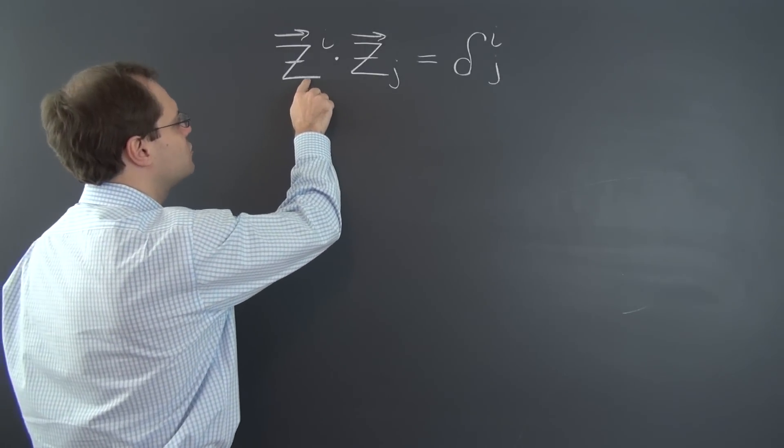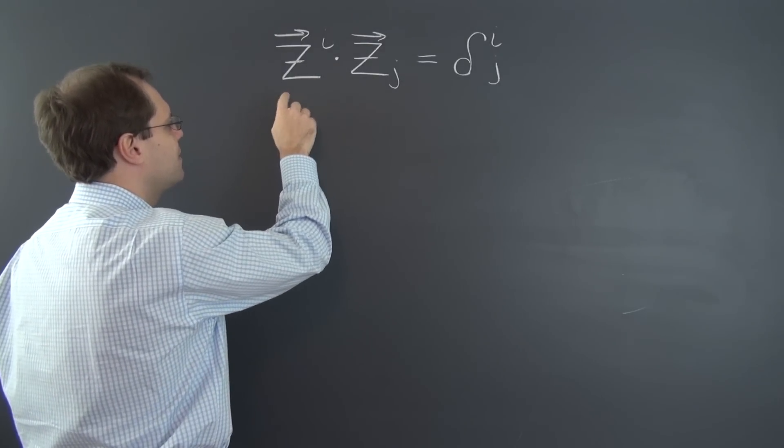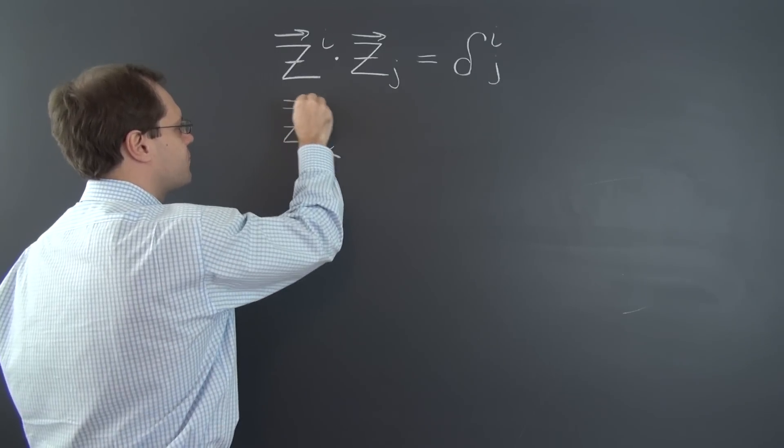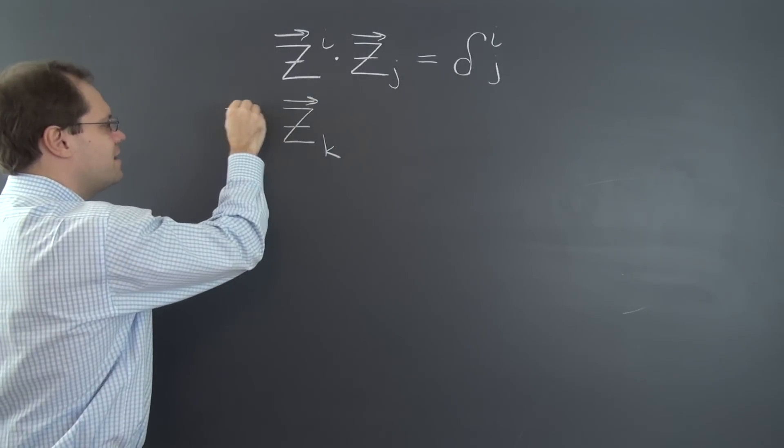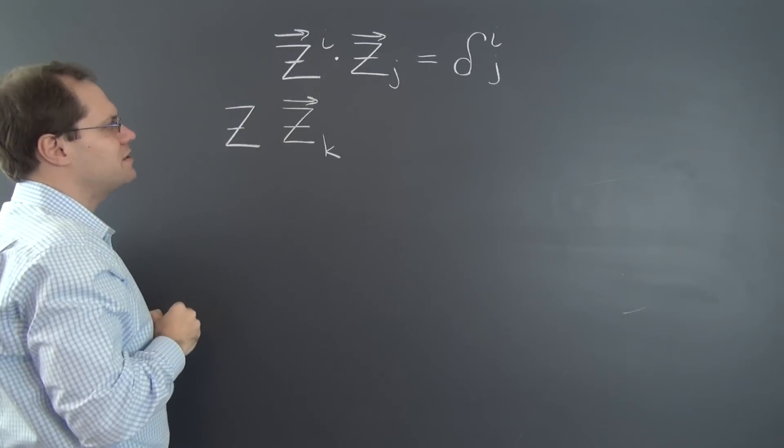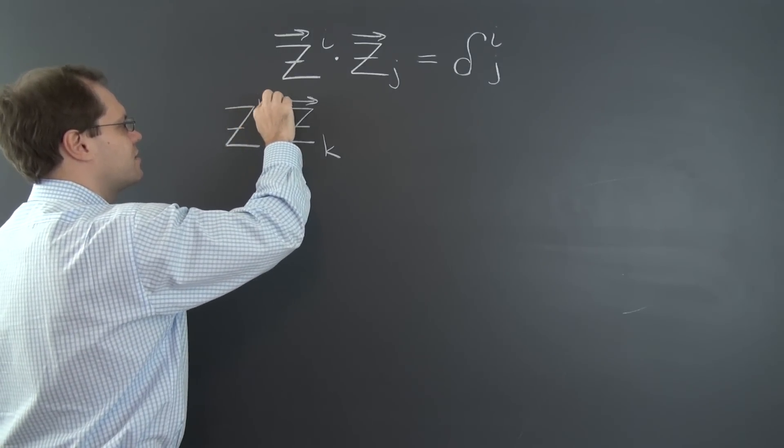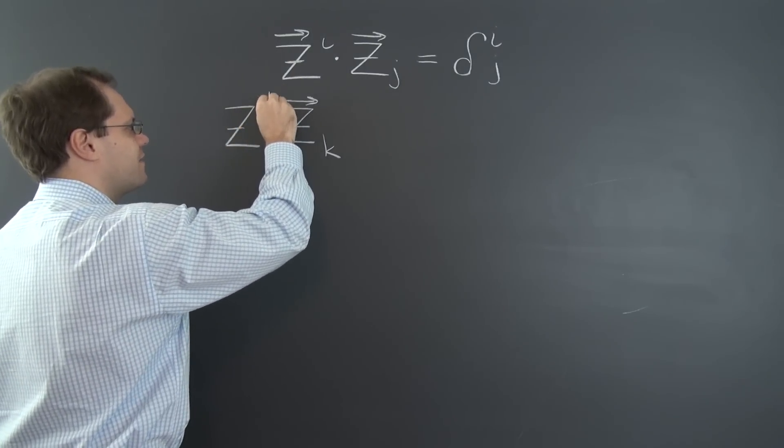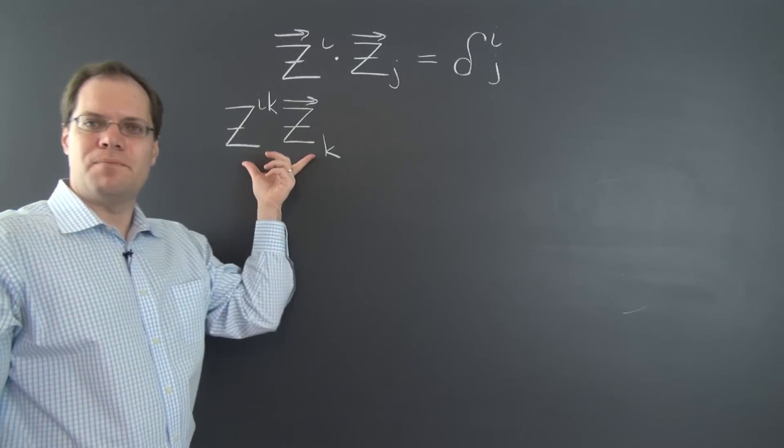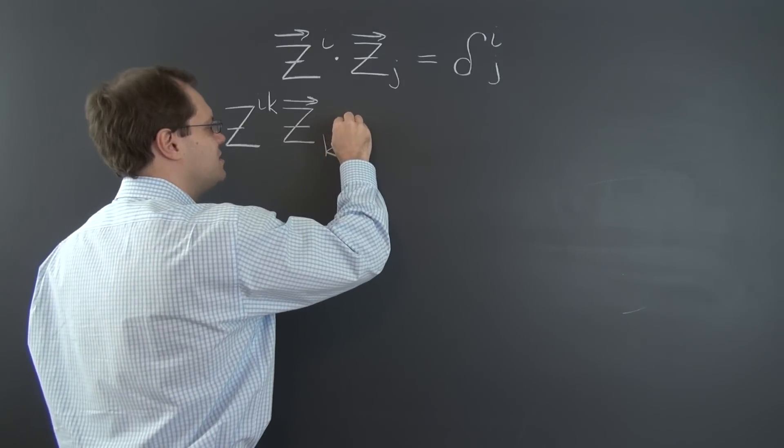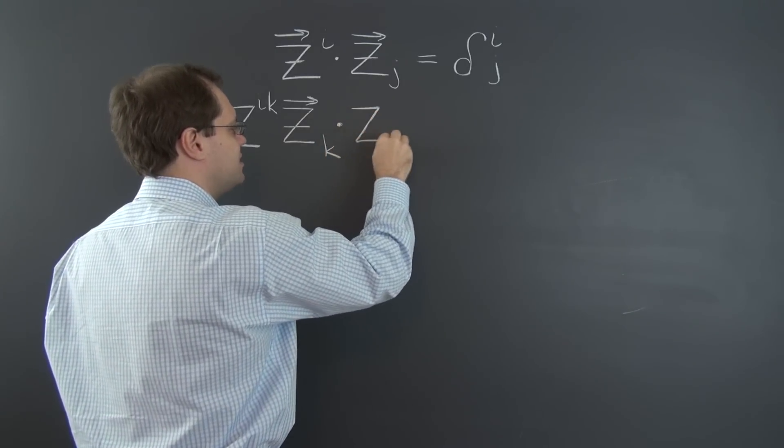So let's see how that happens. So, of course, z^i can be written as z_k multiplied by the contravariant metric tensor. In other words, δ^i_k. So this, by the very definition, is z^i.